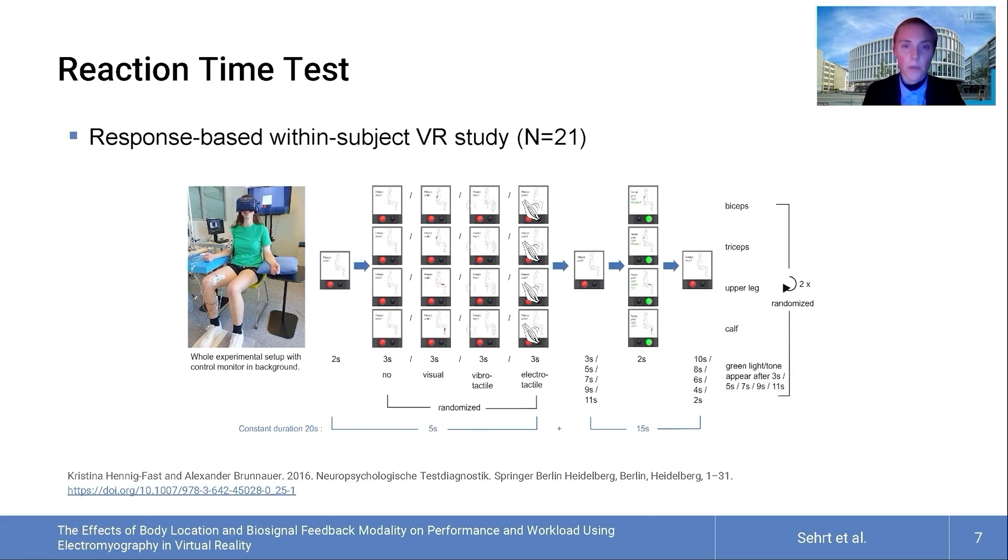In a response-based, full factorial within-subject VR study with 21 participants, we investigated the impact of the prior stimulation modalities on the muscle's reaction times using a Vienna test system, according to Priele et al., adapted for EMG-based input in VR.